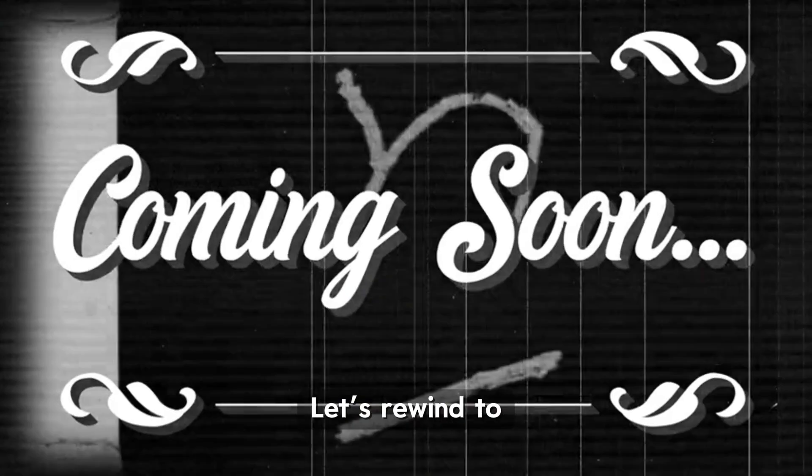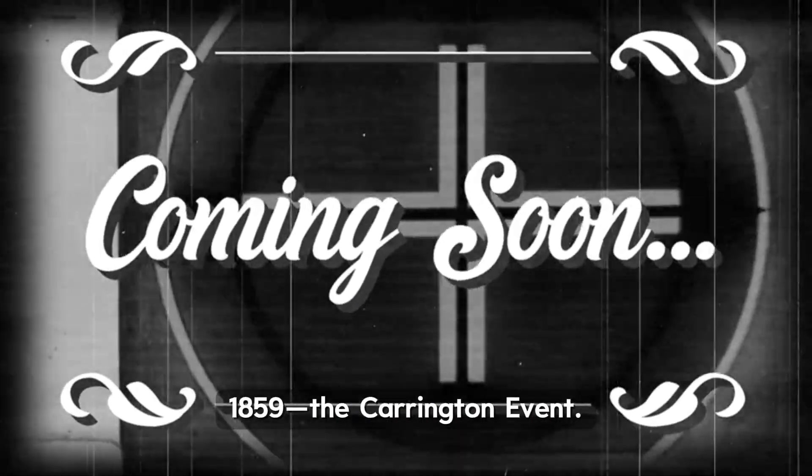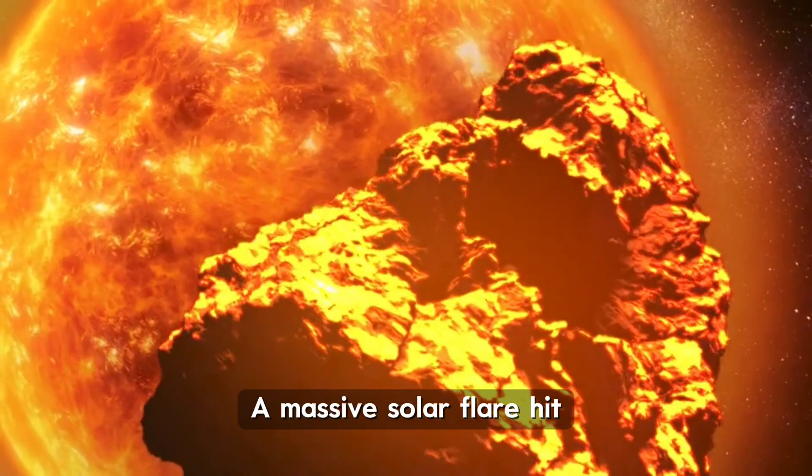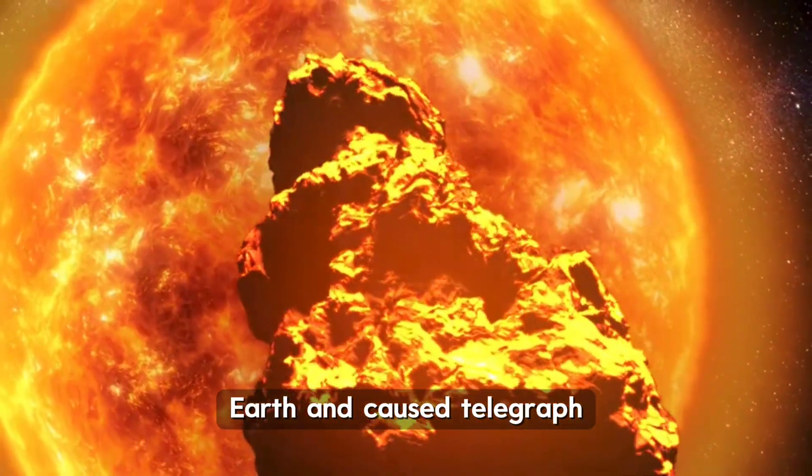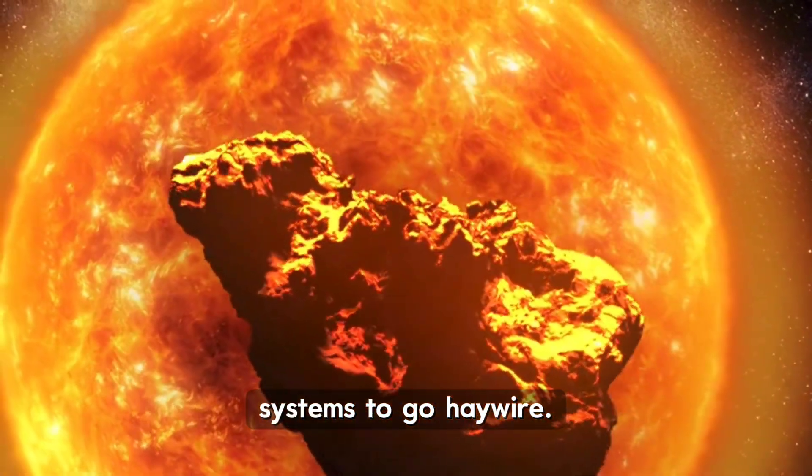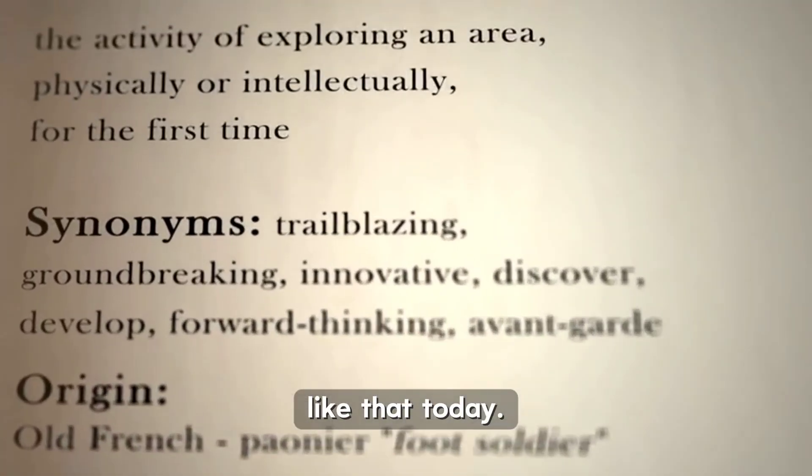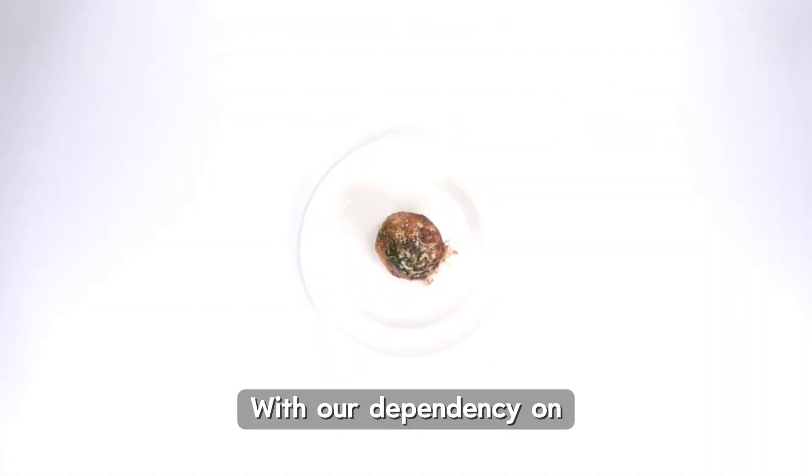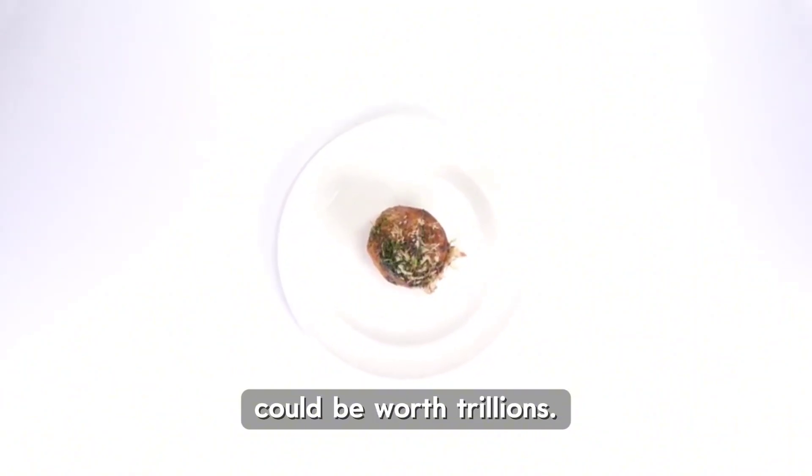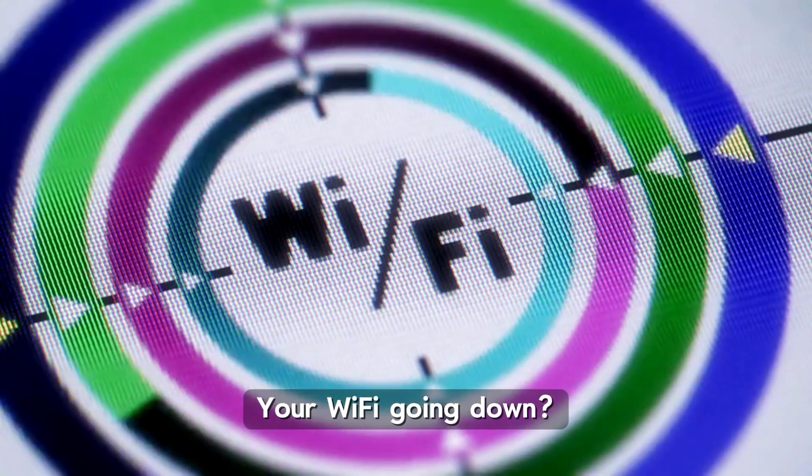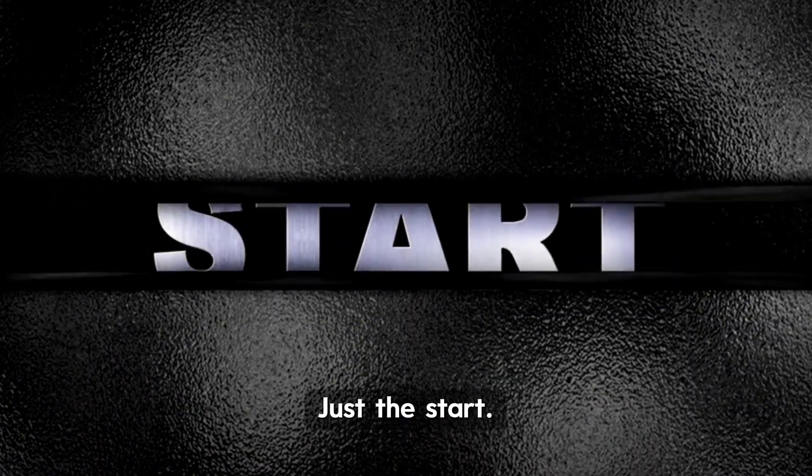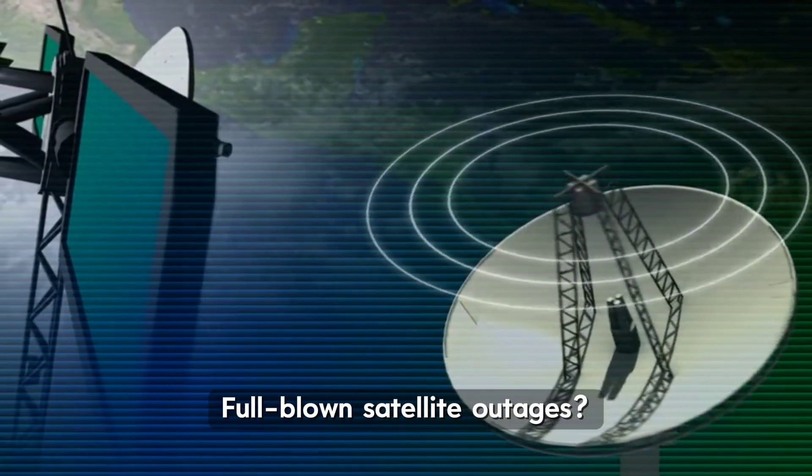Why does it matter? Let's rewind to 1859, the Carrington event. A massive solar flare hit Earth and caused telegraph systems to go haywire. Some even caught fire. Now imagine something like that today. With our dependency on electronics, the damage could be worth trillions. Your Wi-Fi going down? Just the start. Full-blown satellite outages? Possible.